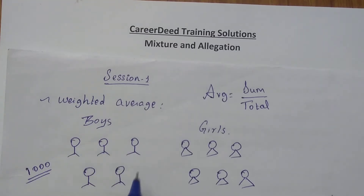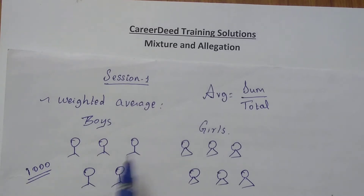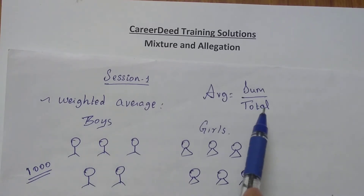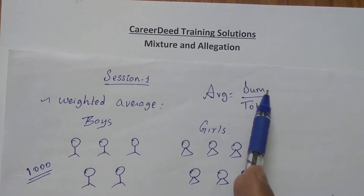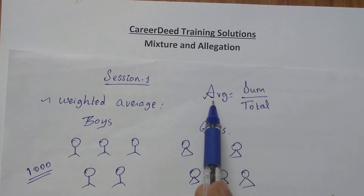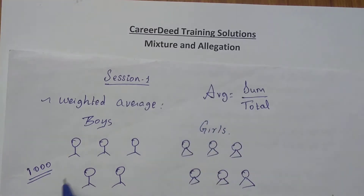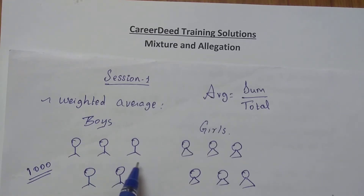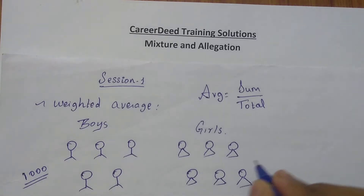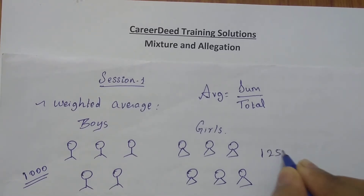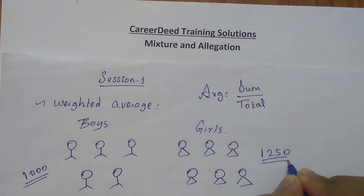Adding all of these gives five thousand rupees. Since there are five boys, dividing five thousand by five gives one thousand as the average. So the average amount spent by the boys on food is one thousand rupees. In the same class there are six girls, and the six girls are spending an average of one thousand two hundred and fifty rupees on their food.